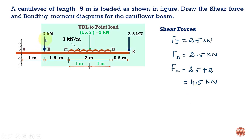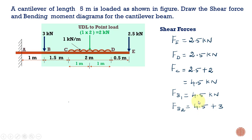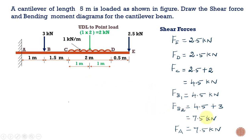At point B we have a point load of 3 kilonewtons acting downward. The shear force from C to B remains constant at 4.5 kilonewtons, but at point B the load suddenly increases due to this point load. Adding 3 kilonewtons to 4.5 gives 7.5 kilonewtons. So at point B there are two shear force values: 4.5 kilonewtons and 7.5 kilonewtons. At point A the shear force remains constant at 7.5 kilonewtons.